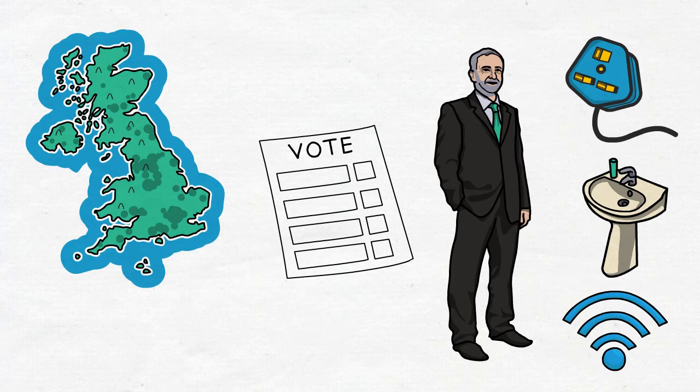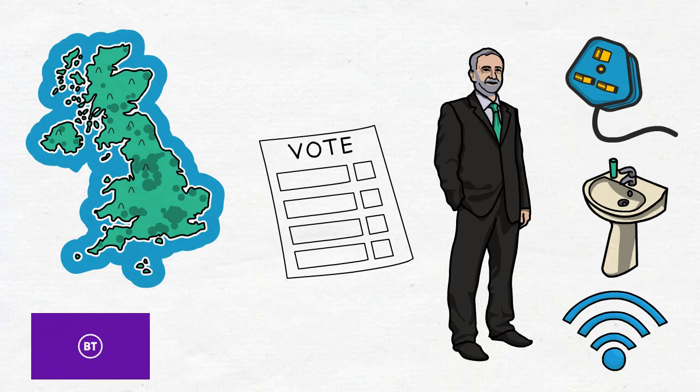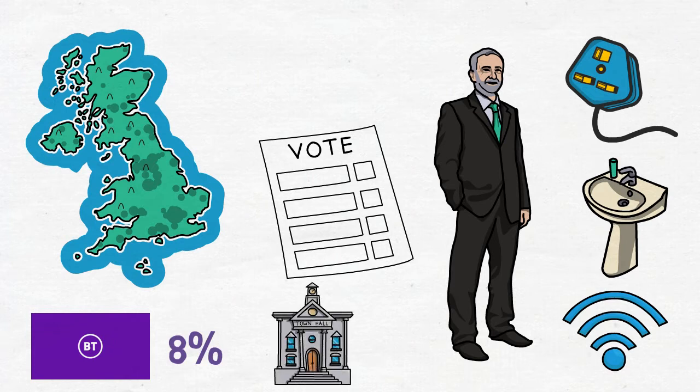A Labour government would compensate shareholders. Instead of buying them out, they'd give them government bonds. This is a pretty terrible deal, in my opinion, as the dividend for the BT Group is over 8%, but government bonds, or gilts, as they're called in the UK, only pay about 1% or so, last time I checked.